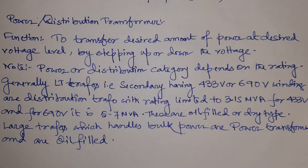The next equipment is the power and distribution transformer — basically the heart of a substation. Its function is to transfer the desired amount of power at a desired voltage level by stepping up or stepping down the voltage. A transformer has two components: power, rated in kVA or MVA, and the voltage ratio. Generally, all LT transformers with a secondary of 433 V or 690 V are called distribution transformers.